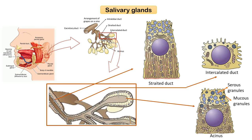In the case of striated ducts, the term 'striated' refers to the light microscopic appearance of the basal cytoplasm, which has well-developed striations perpendicular to the base of the cells. This appearance results from infoldings of the basal plasma membrane producing cytoplasmic rows containing numerous mitochondria, hence the name striated ducts.